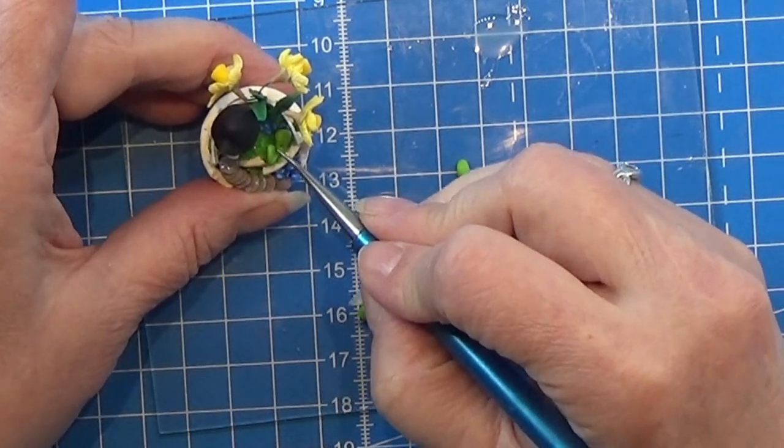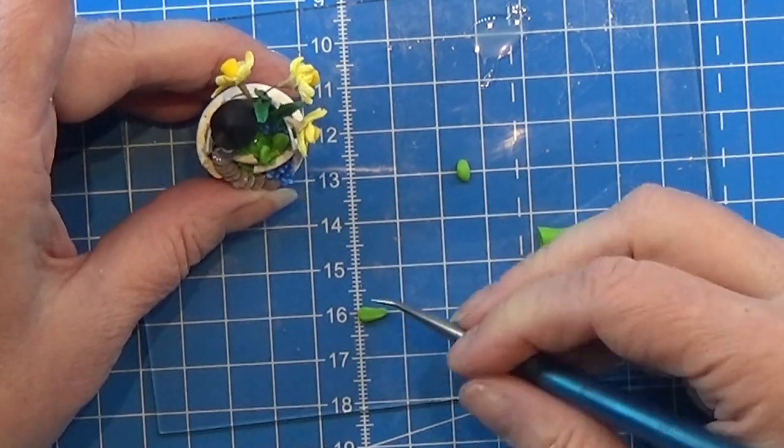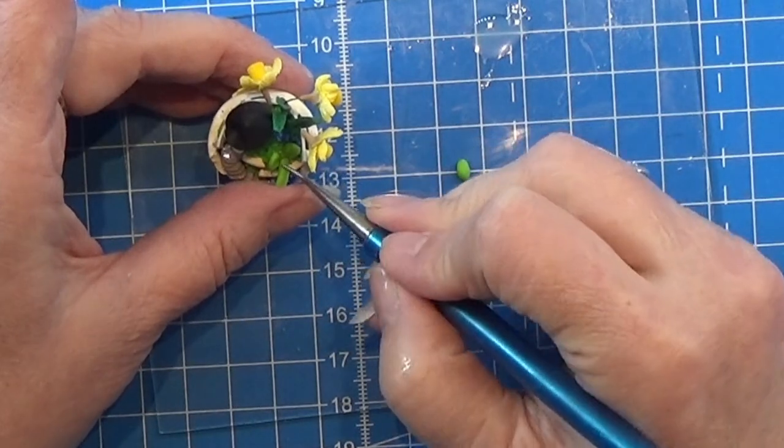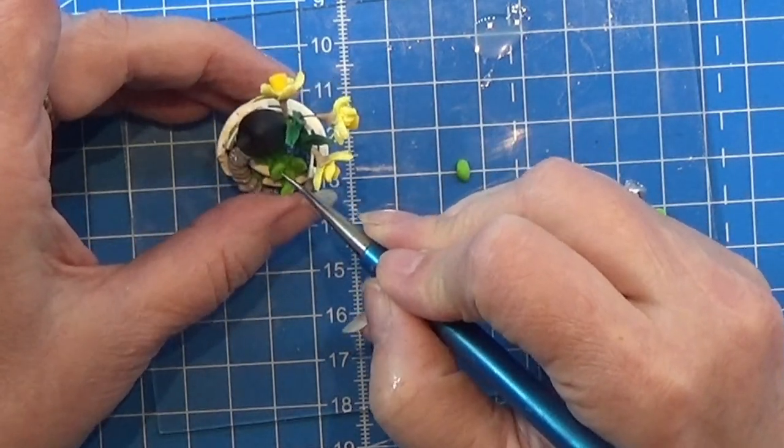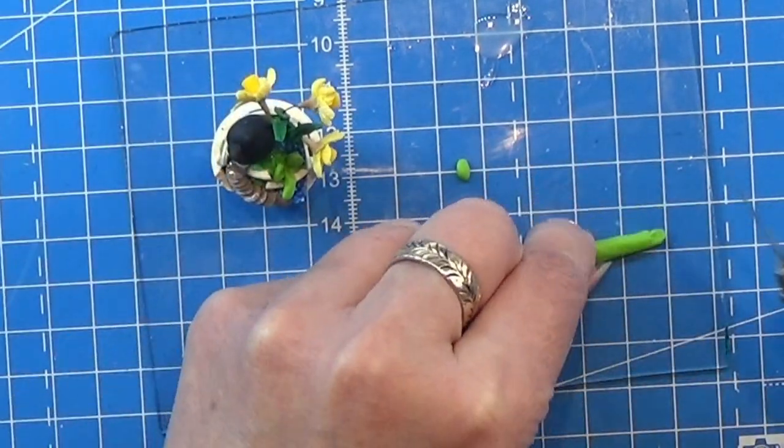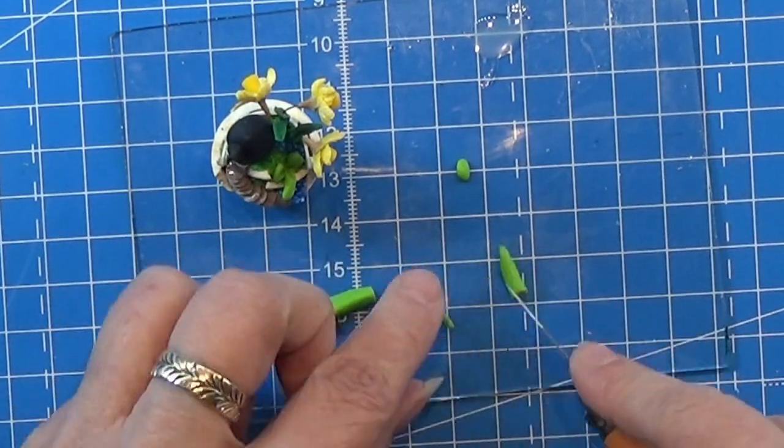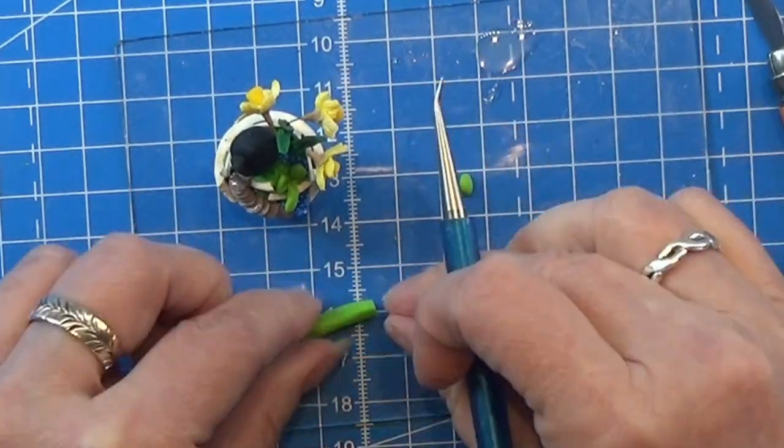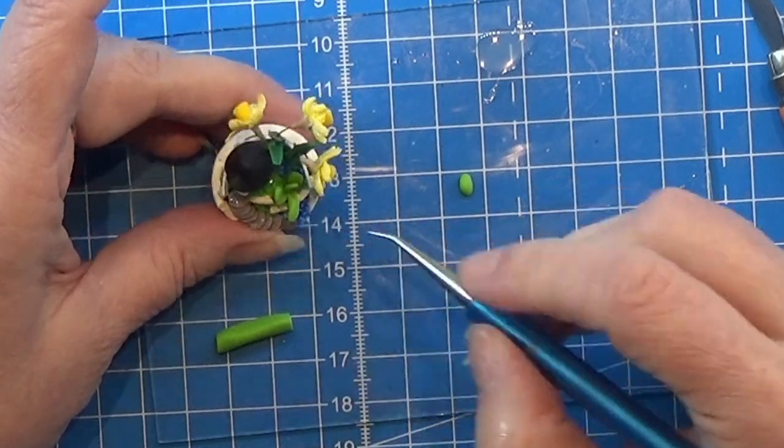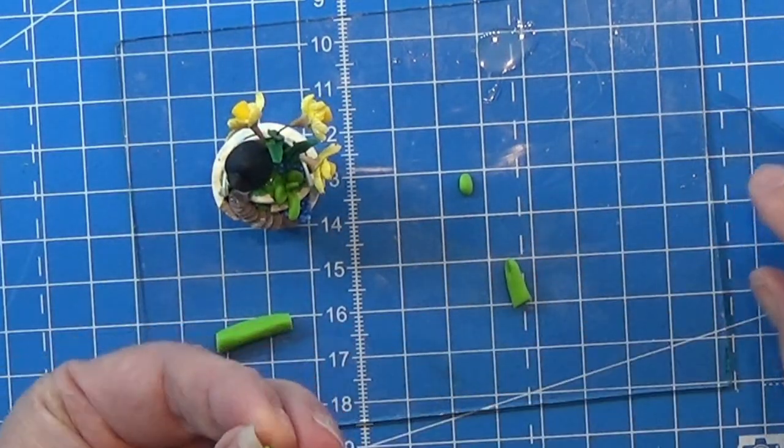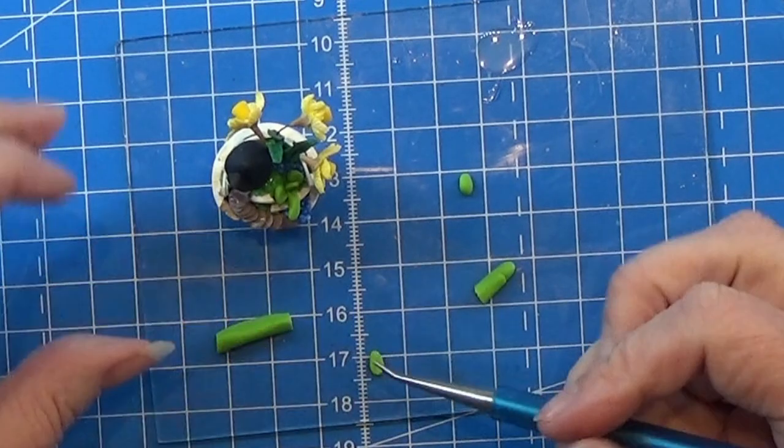Then I'm shaping it a bit in between my fingers. This way it doesn't have sharp edges on there and it looks more organic. Then I'm just filling up this little spot here with the leaves from the outside to the inside.